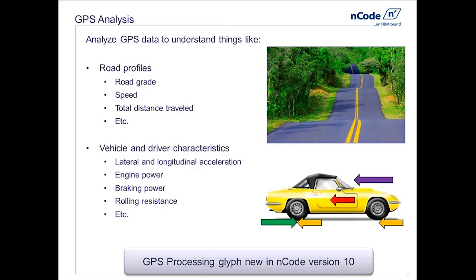We can extend this into looking at vehicle and driver characteristics by applying some physics models. If GPS shows our position changing over time, basic math gives us speed from position changes and acceleration from speed changes. The GPS processing glyph can then calculate longitudinal and lateral acceleration. If we also know vehicle mass and drag coefficients, we can calculate rolling resistance, power consumed by aerodynamic drag, braking performance, and so on — a number of unique vehicle characteristics that give us a great handle on how these vehicles are actually used.